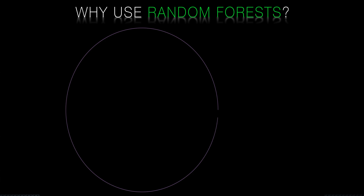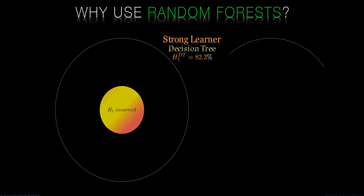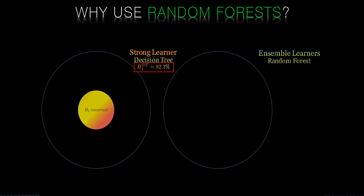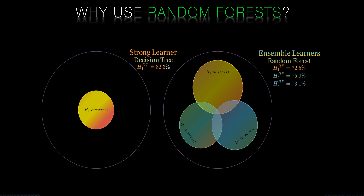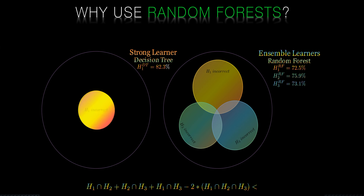An intuition for the improved performance of decision trees is shown here. Here is a decision tree that's a strong learner with an accuracy of over 82%. Alongside it, and trained from the same base data, we build a random forest of weaker learners each with a lower accuracy — in this example between 73 and 76%. But by changing the sample data for each tree through bagging and feature selection we reduce the correlation between each model, improving ensemble accuracy. In this example, if the area of intersection of the trees in our forest is 17.7% or less, we will have a better aggregate ensemble learner than our original base learner.